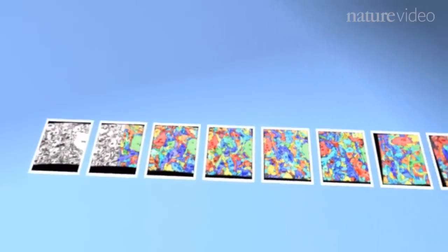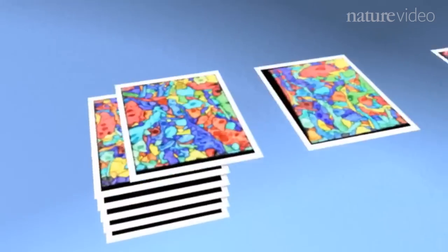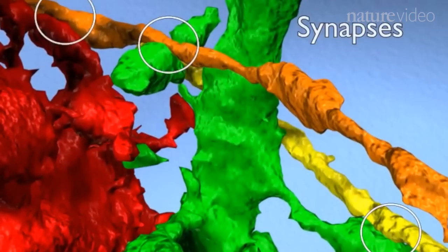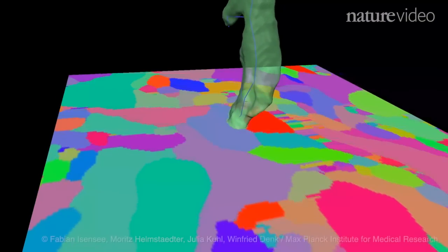The images were then analyzed by a computer which assigned different colors to different structures. The computer was very good at determining the volume of each structure and identifying synapses where one cell connects to another.